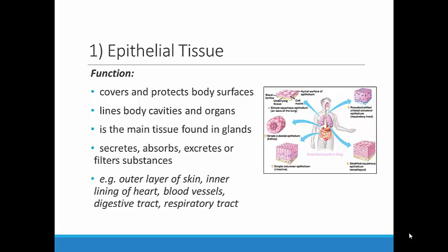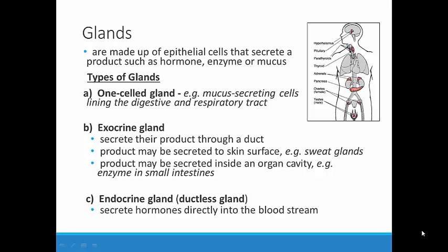Another function of epithelial tissue is that it can secrete, absorb, or filter substances. For example, sweat glands produce and release sweat to help us regulate our body temperature when we're too hot. You can find epithelial tissue lining surfaces both inside and outside the body. This includes the lining of the chambers of the heart, as well as the inside of the digestive and respiratory tracts.